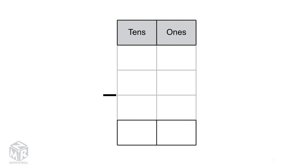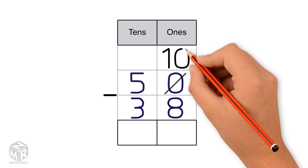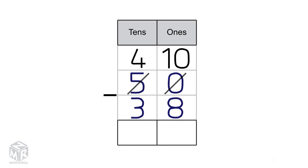Let's try another example: 50 minus 38. Pause this video and try to solve it on your own. We can't subtract 8 from 0, so we regroup one 10 as 10 1s. Now we have 10 1s and 4 10s. Next, we subtract the 1s: 10 minus 8 equals 2.